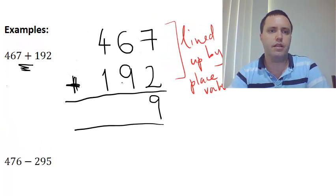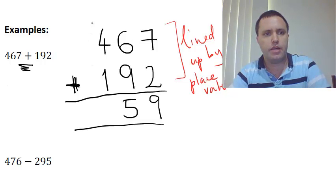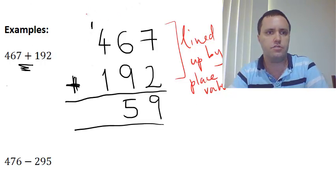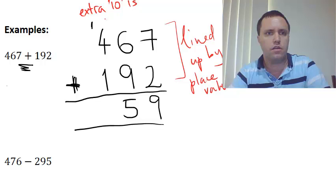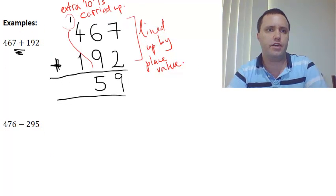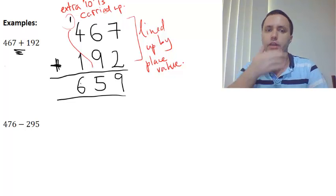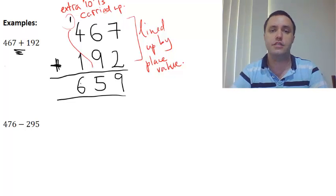Right, 6 plus 9 is 15. So what we do is that we write the 5 here and we carry the 1 up here. Okay, so the extra 10 is carried up. Okay, so that 1 belongs to this 5 to make the 15. Okay, so now when we're adding up our 100s column, we have 4 plus 1, but then we have this extra 1 up here. Okay, so 4 plus 1 is 5 plus 1 more is 6.